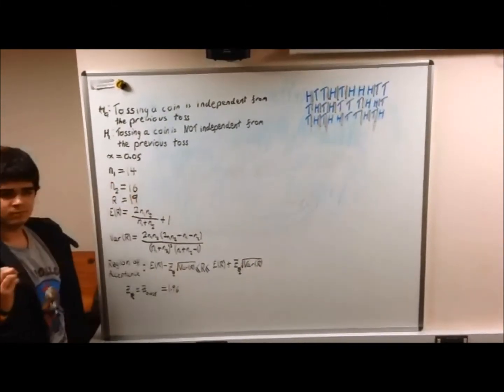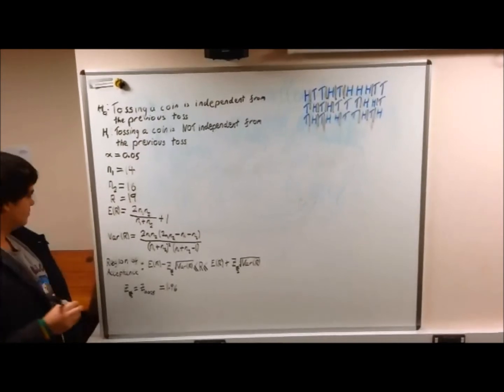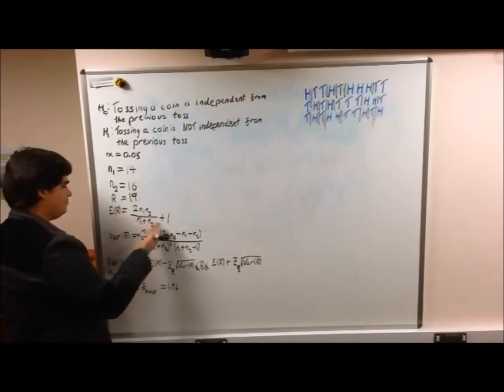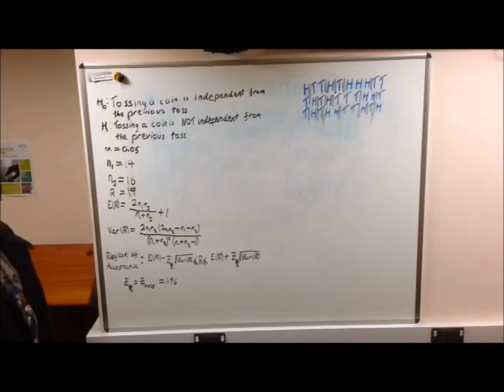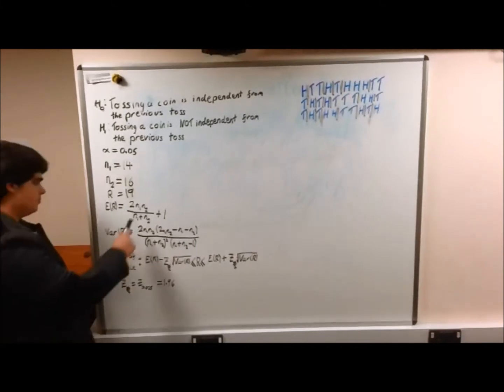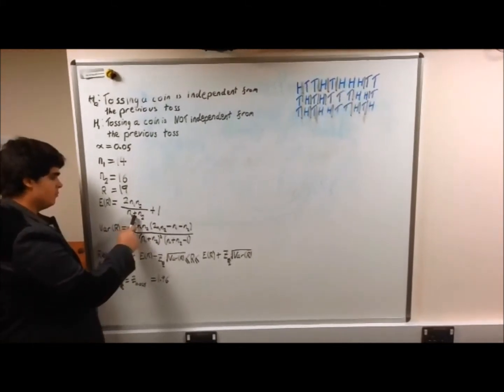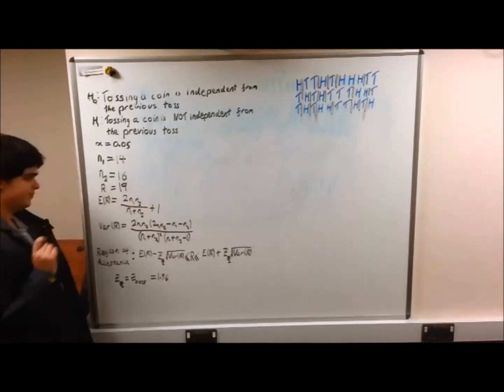The expected value is the value you expect R to be. So in this case, 2 times N1 times N2 over N1 plus N2, and then plus 1 to that value.